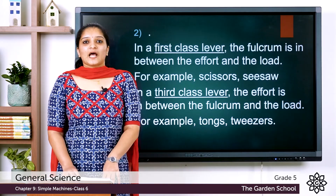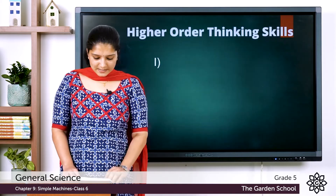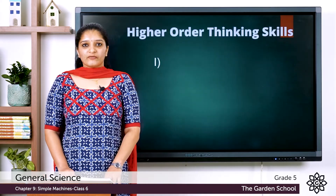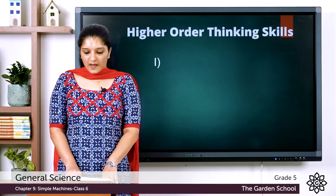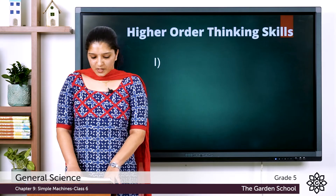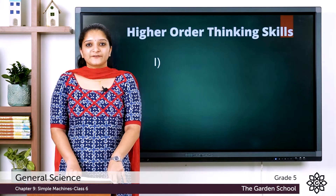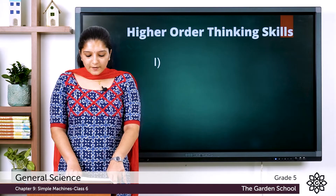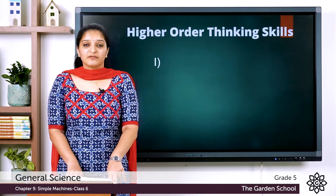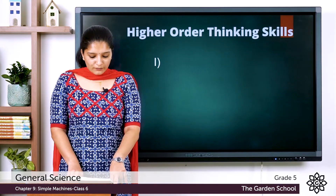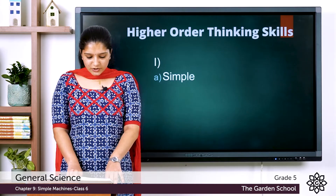That was all about answering the questions in two or three sentences. Now let's move into higher order thinking skills. There are two sets of questions given. In the first set, a picture is given and you have to answer four questions. In the picture you can see a gorilla sitting on a seesaw. The first question is: what type of machine is the gorilla sitting on? Since the gorilla is sitting on a seesaw, and a seesaw is an example of a simple machine, the answer is a simple machine.